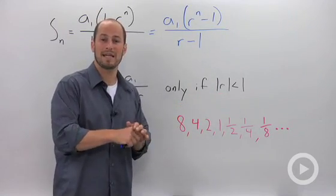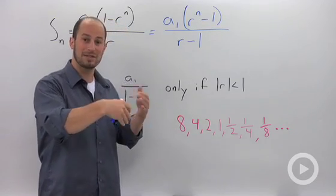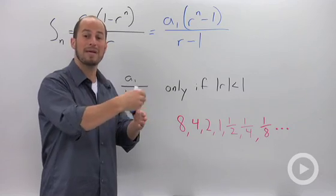And what that means is that our terms have to be getting smaller. I'm not talking about positive and negative because they can switch back and forth. But basically, the numeric part of our numbers have to be getting smaller.